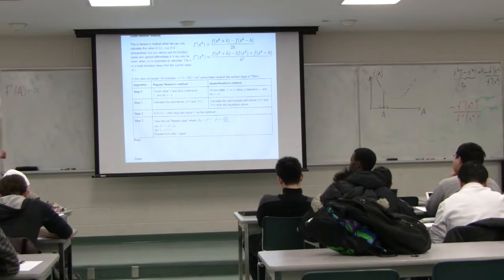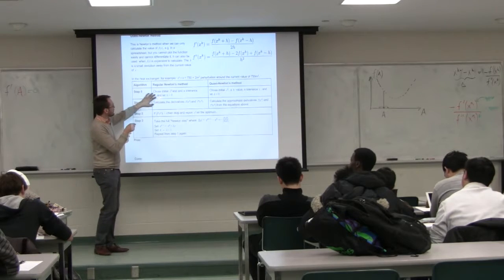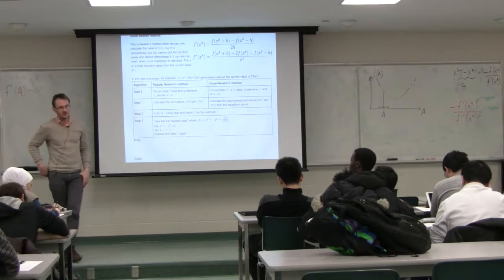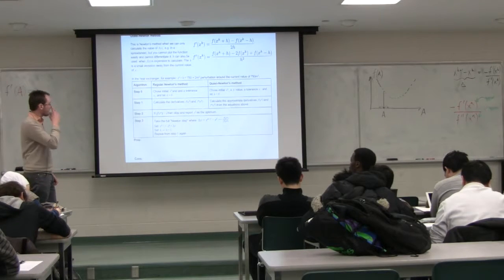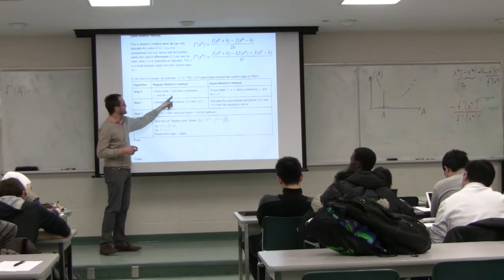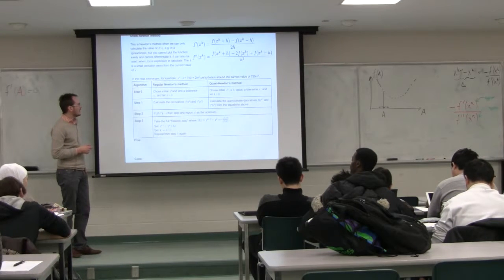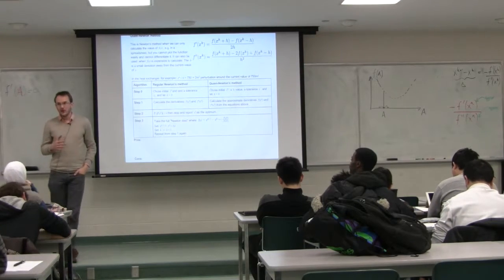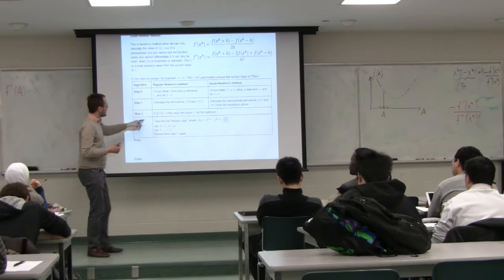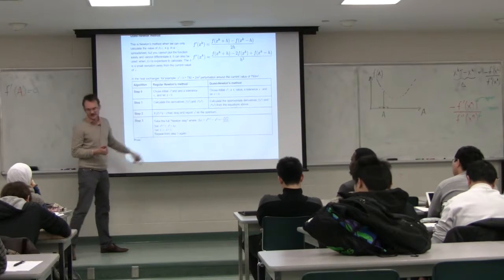Many of you did this on Friday in the computer lab. With regular Newton's method: start with an initial guess, select a tolerance, let index k be zero. Calculate those derivatives at x naught — f prime of x_k and f double prime of x_k. We might be lucky on our initial guess, but the stopping criterion is the absolute value of f prime of x_k less than epsilon.